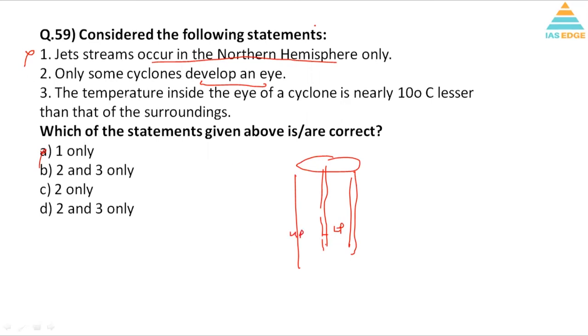The temperature inside the eye of a cyclone is nearly 10 degrees lesser than that of the surrounding. The temperature inside the eye of cyclone is nearly 10 degrees - in the upper part the temperature is different and the lower part is different, so that is not correct. So it's a little typical question. Answer B is the right - sorry, it is not correct, so three is not correct.